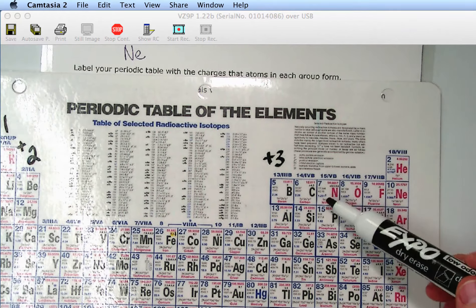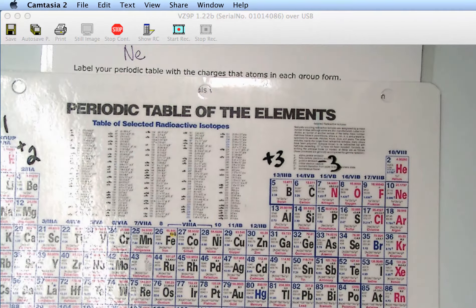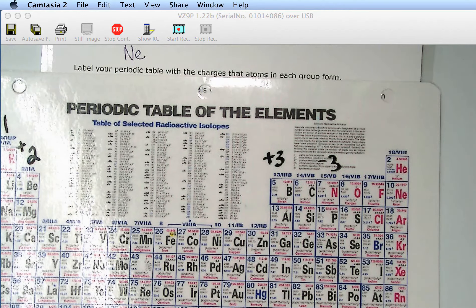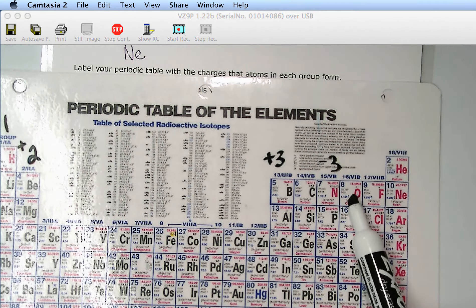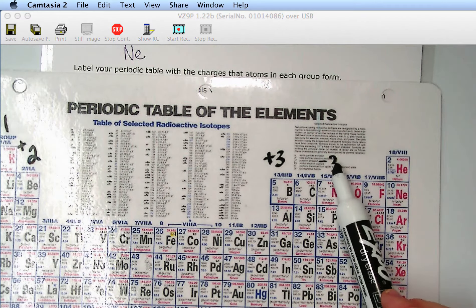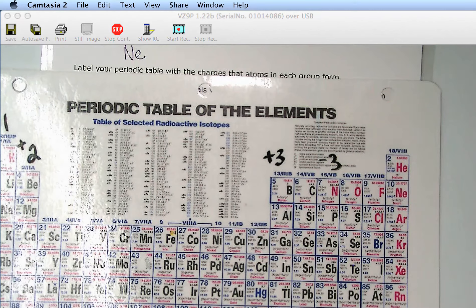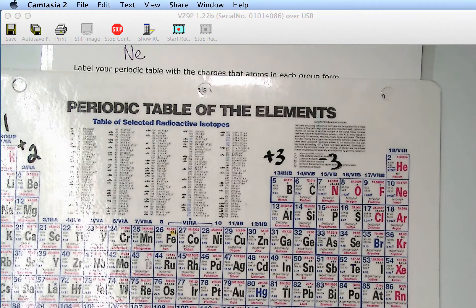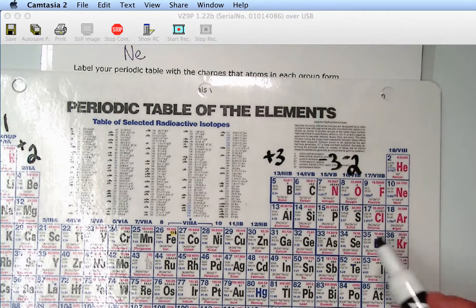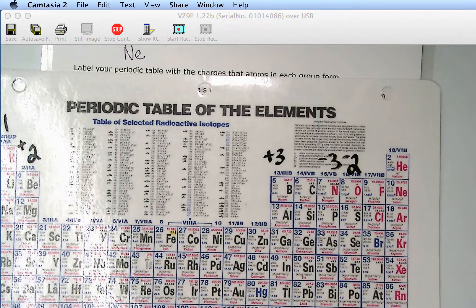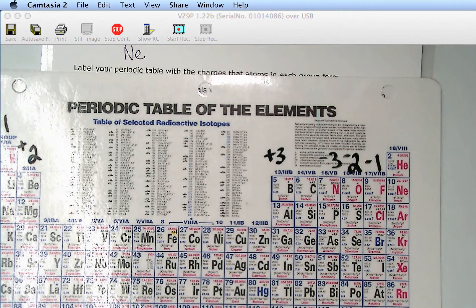Now, group five. Remember our example, nitrogen, had a negative three charge. So, now, we're going from losing electrons to gaining electrons. And if you think about this, you can visually look. Okay. Well, in order for nitrogen to get to a neon configuration, it's going to have to gain one, two, three electrons. That's why it has a negative three charge in that group five. Group six, it's going to need to gain one, two electrons to get to the noble gas configuration. You get that octet, so that's negative two. Group seven. The halogens just need to gain one electron. So, we're going to have a negative one charge. Questions on that?